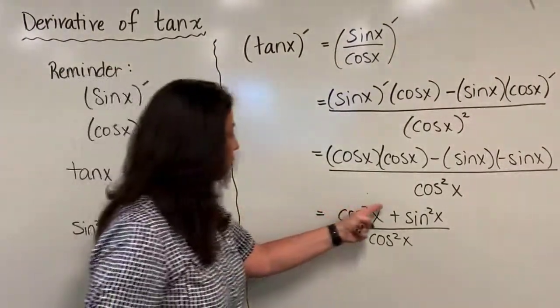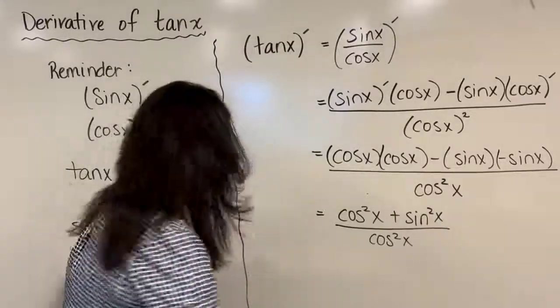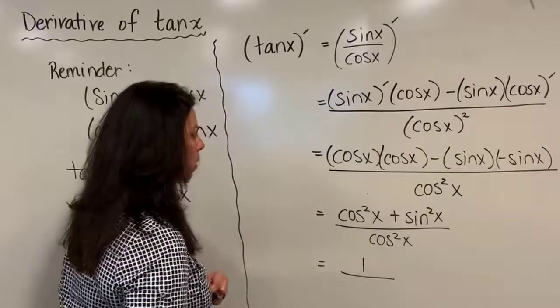And so I can come back over here and say oh that's just a fancy way of writing the number one. And let's put that in to simplify life. So I have one on the numerator now. In the bottom I have cosine squared x. And that is my derivative for the tangent x.